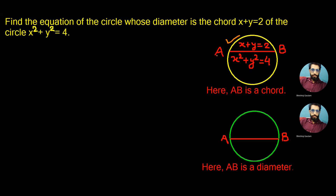Here, the first figure represents AB as a chord and the second figure represents AB as a diameter, and we are expected to find the equation of the second diagram. So our first step in this question is to find the values of x and y by solving the equation of the chord and the circle.